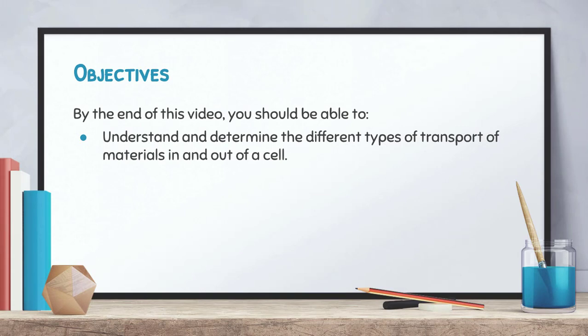Hopefully you now have a better understanding of how materials move in and out of the cell. We'll talk more about this in class. Moving forward, we are going to start talking about how cells obtain their energy through the processes of photosynthesis and cellular respiration. Hope you had a good day — talk to you next time!